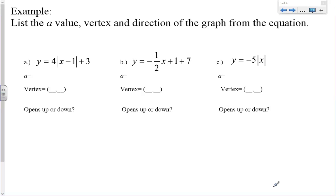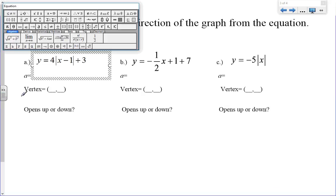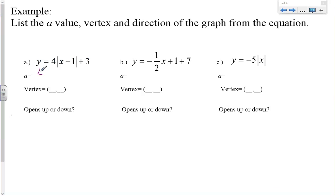So the a value is this positive 4 that we have here. The vertex, we have to take the opposite of what we see here. So because we see this as a negative 1, my h value is a positive 1. And then my k value is 3. So we're taking the opposite of what's inside those absolute values. And does it open up or down? This one, because a is positive, it's going to open up.